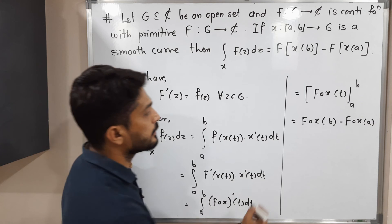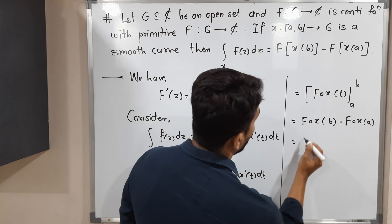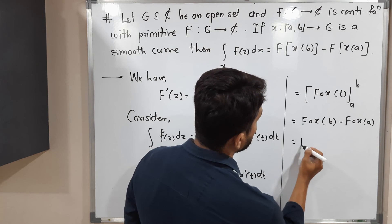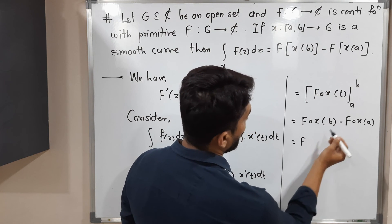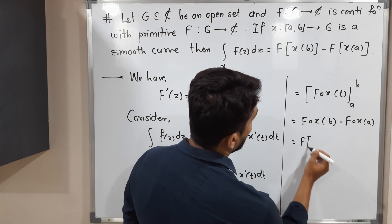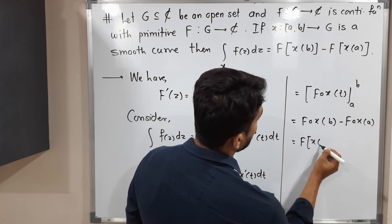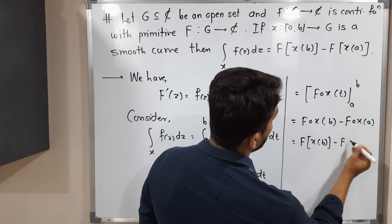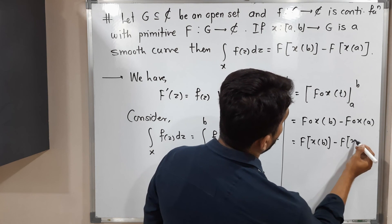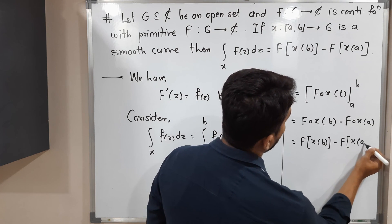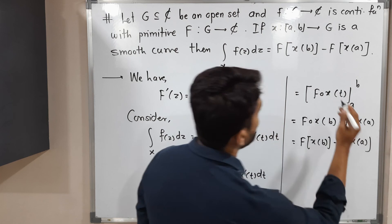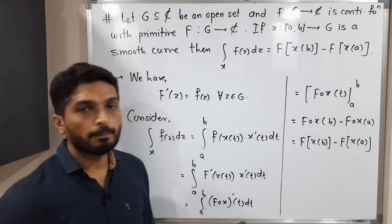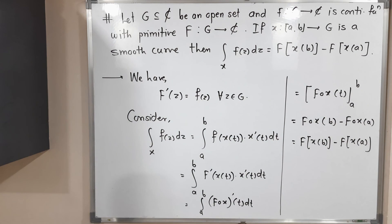We can also write this as F(x(b)) minus F(x(a)), since F composite γ means γ operates first. In this way we have proved the result.